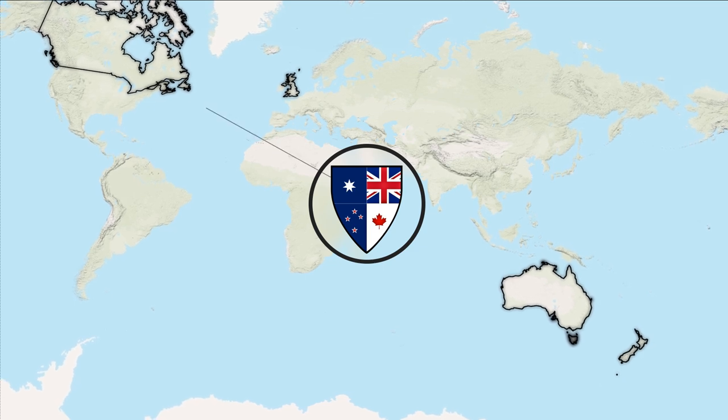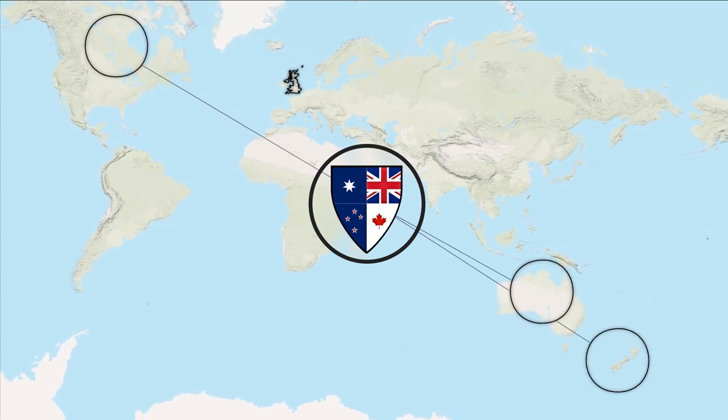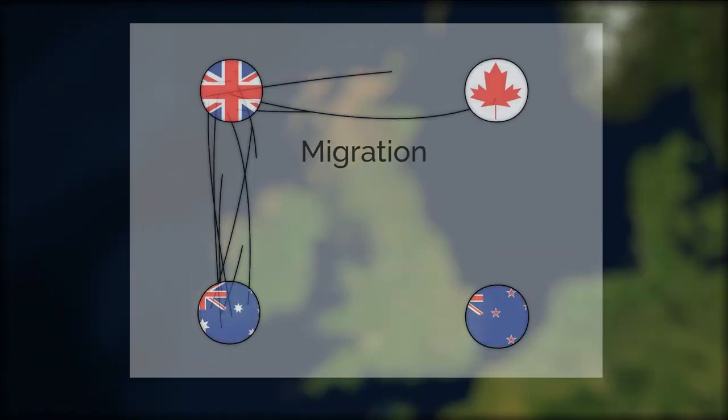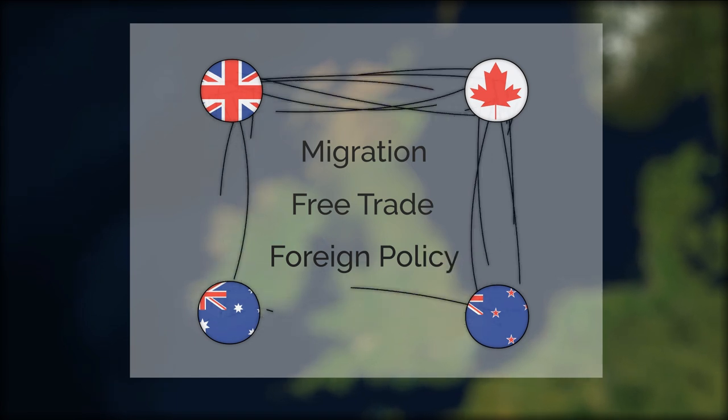KANZUK is a diplomatic alliance between Canada, Australia, New Zealand and the United Kingdom, promoting reciprocal migration, free trade and foreign policy cooperation between these countries.